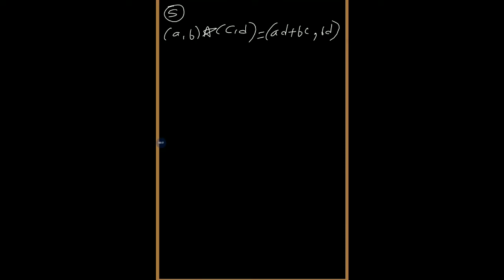In this binary operation question, we have to find the identity element. First of all, we have to find out and understand the order. So let me explain: the order is (a, b) star (3, d) = (3, 4).